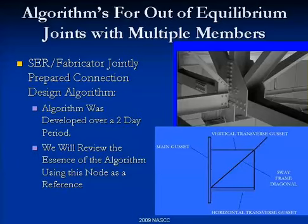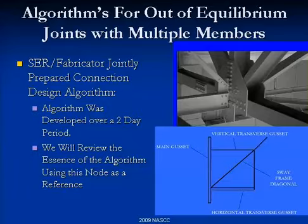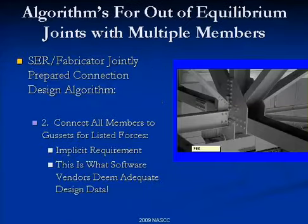We developed the transfer force algorithm over a day-and-a-half meeting — a fairly painless meeting. We sat down and reviewed what looked good to both the fabricator and the engineer who did the analysis. We decided the cord splice would be away from the panel point — that really helps, giving nice continuity of the cord through the joint and reducing the overall gusset size. We also decided all members would be connected to their supporting gussets for their listed forces — that's implicit. If you have 500 kips in a member and you're connecting it to something, you need to connect it for 500 kips.